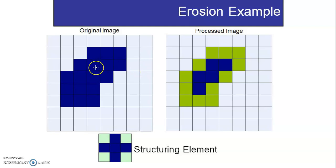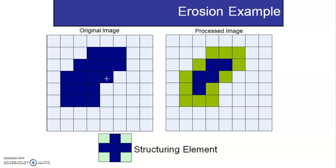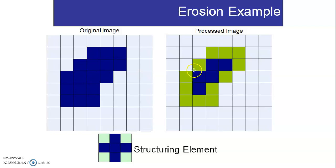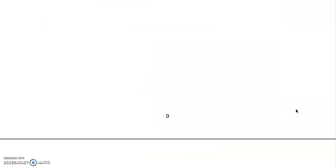Moving to the next pixel — if you try to place the plus-shaped structuring element there, all the on pixels are matching. So it is also going to be dark blue (1). This is how erosion takes place. The green portions in the visualization indicate areas that were originally blue but have been removed due to erosion.